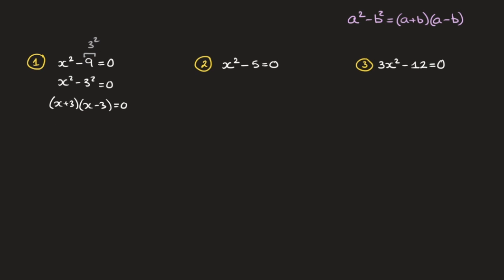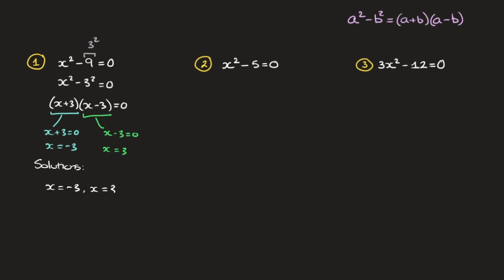On the left hand side we have two pairs of parentheses being multiplied, and the product is equal to 0. The only way that can happen is if either x plus 3 equals 0, or x minus 3 equals 0. Solving each of these two equations leads to x equals negative 3 and x equals 3. These two values of x are the solutions to this quadratic equation. Solutions: x equals negative 3 and x equals 3.